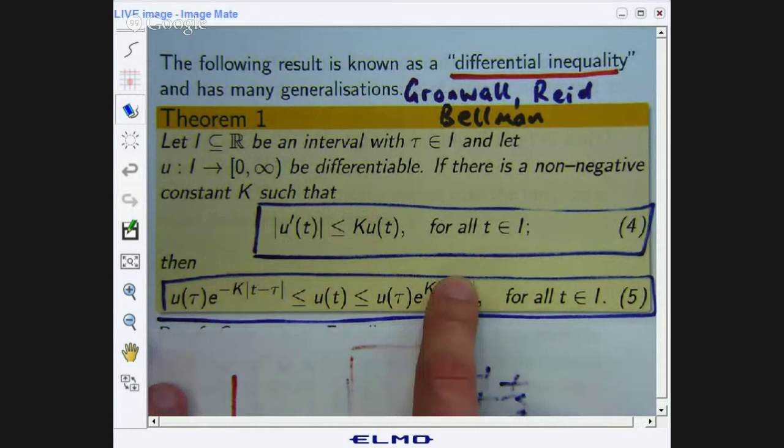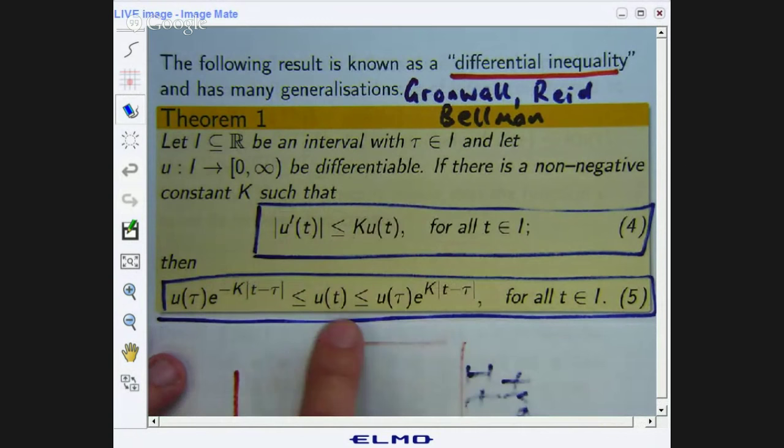Now on first reading it looks a little bit strange but here basically you've just got two differential inequalities compactly written using the absolute value signs. And here, what does this tell you? It tells you that every function that satisfies inequality (4) is bounded between two other functions. I'll give you a picture of that a bit later. So if this is true, then this is true.